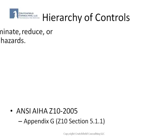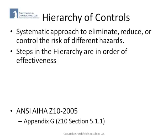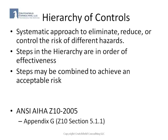The hierarchy of controls is a systematic approach to eliminate, reduce, or control the risk of different hazards. There are steps in the hierarchy, as we just went through, that are in order of effectiveness. These steps can be combined to achieve an acceptable risk. If you're putting PPE on, you would definitely have administrative controls and warnings to let people know when they have to wear the PPE. If you've got engineering devices in place, we have administration of how we maintain those and let people know what the hazard is. So we can combine all of these into achieving an acceptable risk.